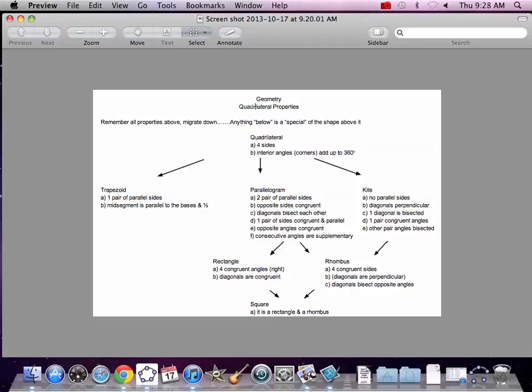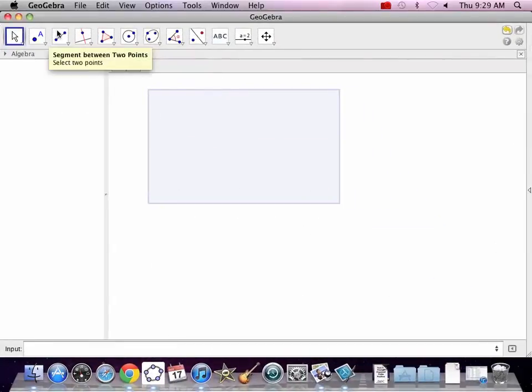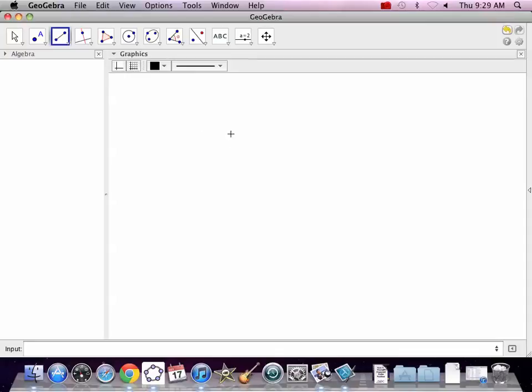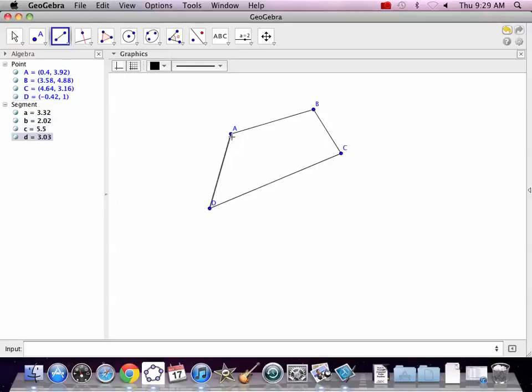Let's just start at the top with quadrilateral. We're going to construct it, and the quadrilateral has four sides, and the interior angles add up to 360. So to make a quadrilateral, just draw four sides. So we get our GeoGebra out, our segment tool, side one, side two. Any four-sided enclosed figure is a quadrilateral, nothing special about it.